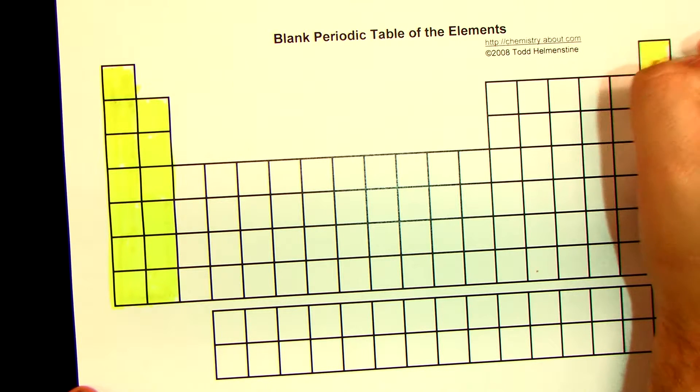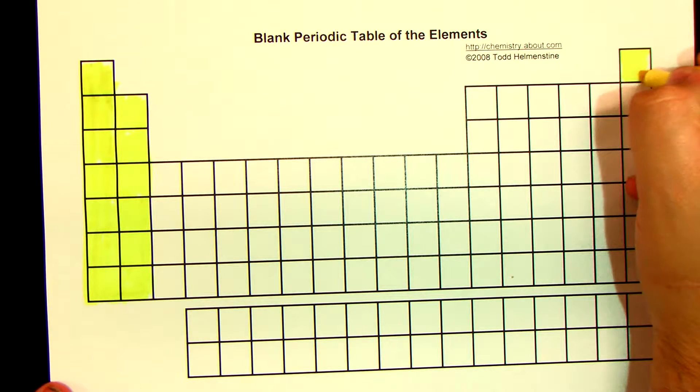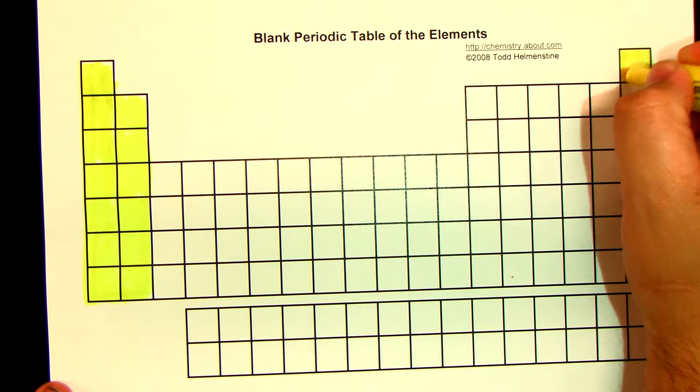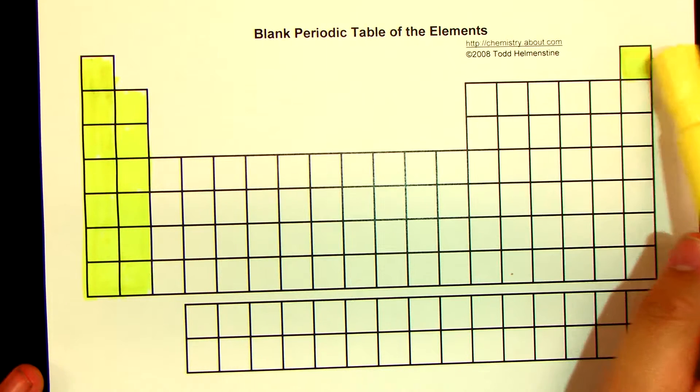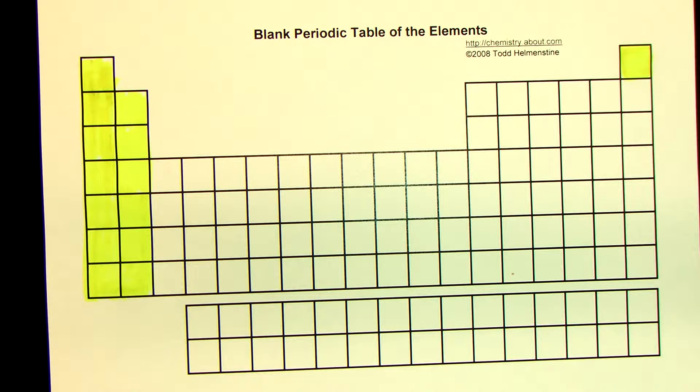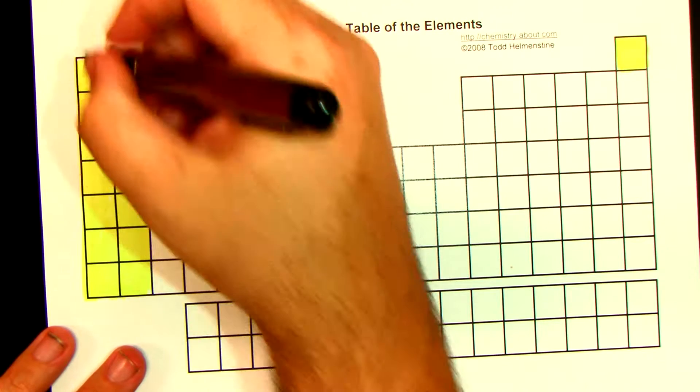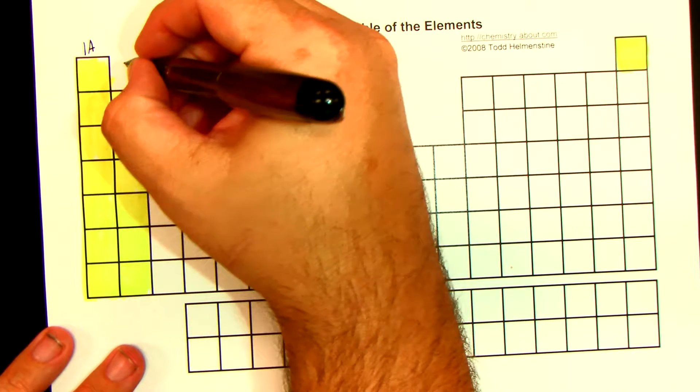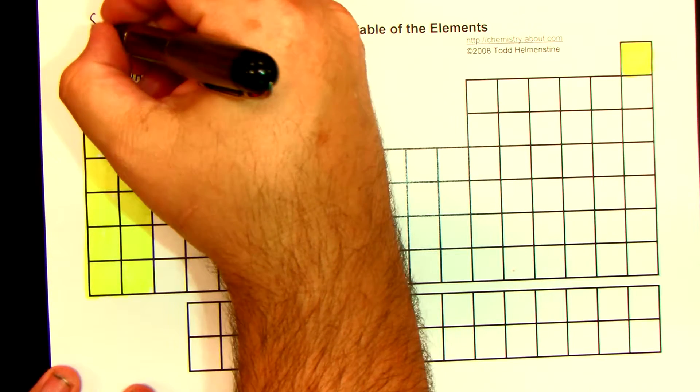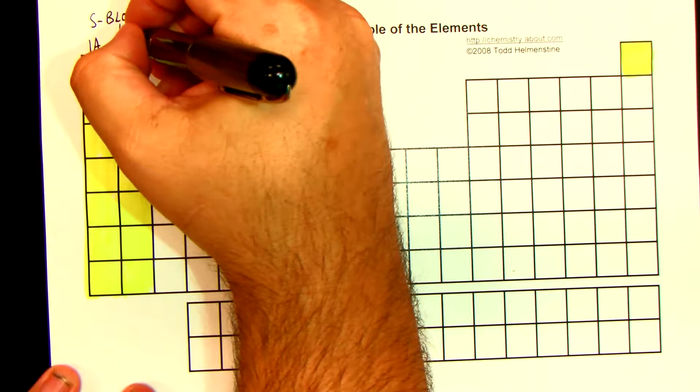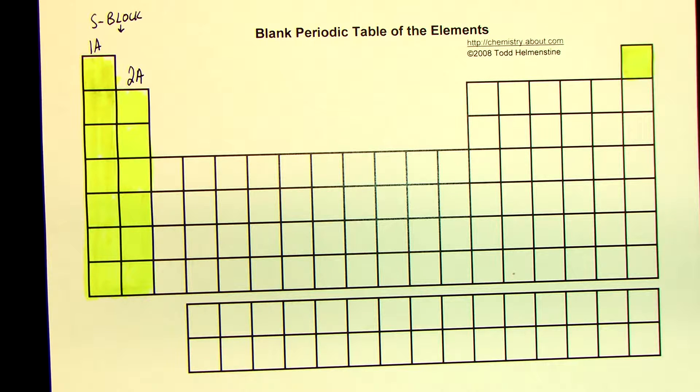And helium, the one element that's way over here, the helium over here, is also technically part of the S block. But it gets put way over to the other side just because. So there's your S block. And if you want to, you can say, alright, here I got my 1A. And this is called 2A. That is the name of the columns. Above there, you can just put S block. And if you want to put a little arrow down there, you can as well. Whatever makes you feel better about what's going on with that.